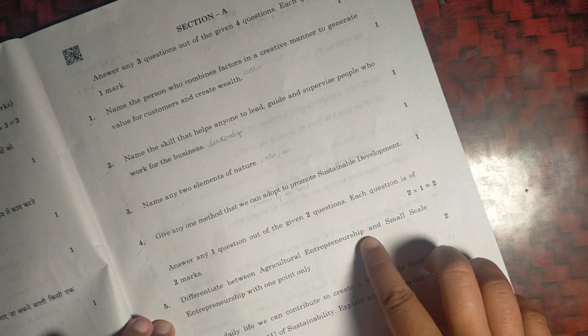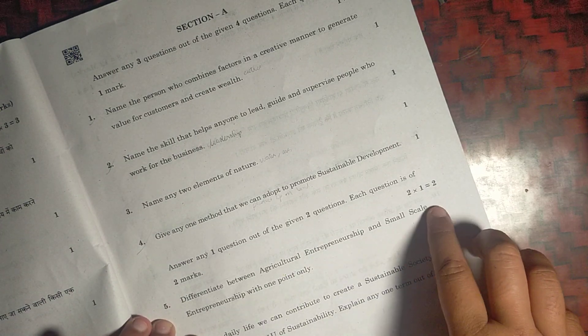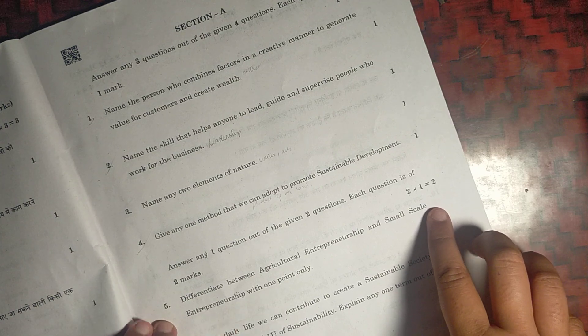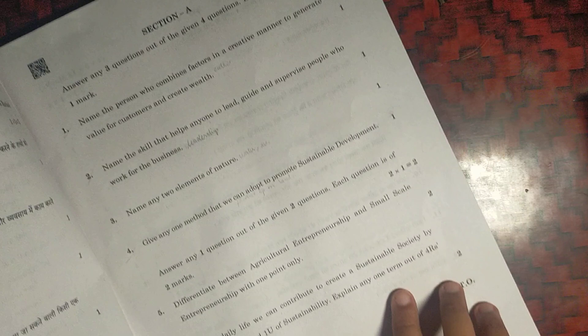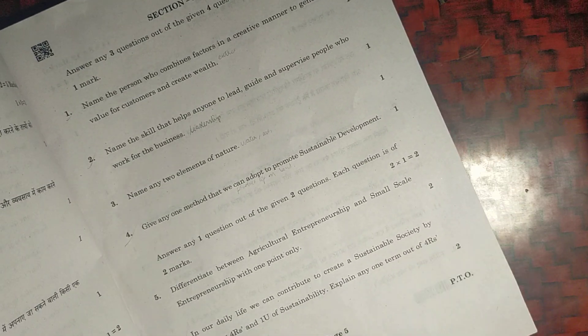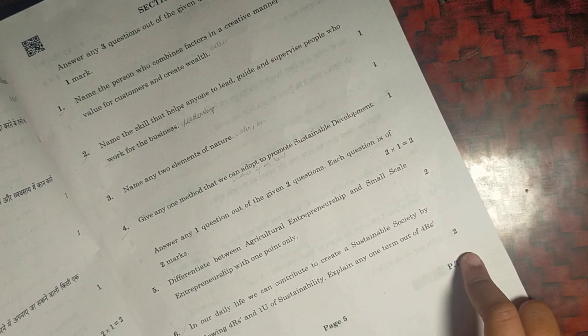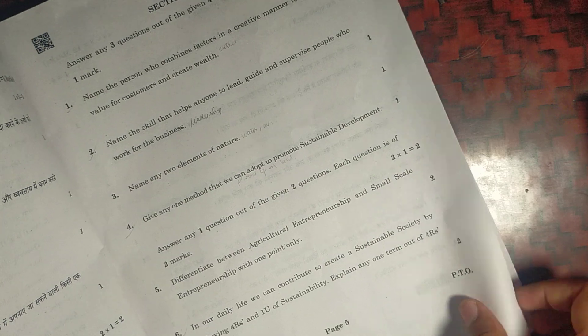Fifth one, you need to explain what is agriculture entrepreneurship and how small scale entrepreneurship works. Question number sixth, we have to write any one of the four R's and one U. So you can write any one of reduce, reuse, recycle.